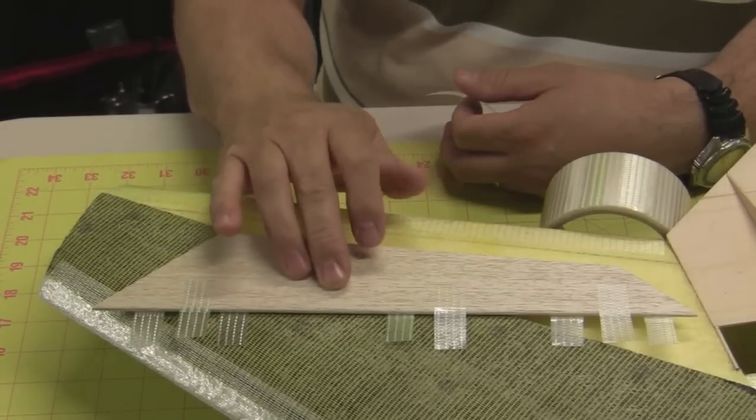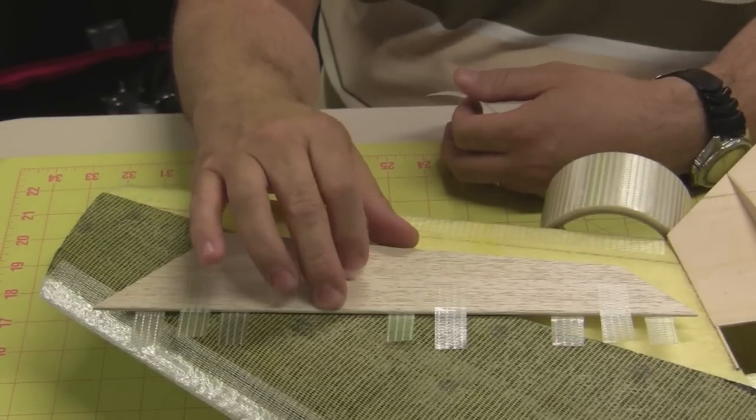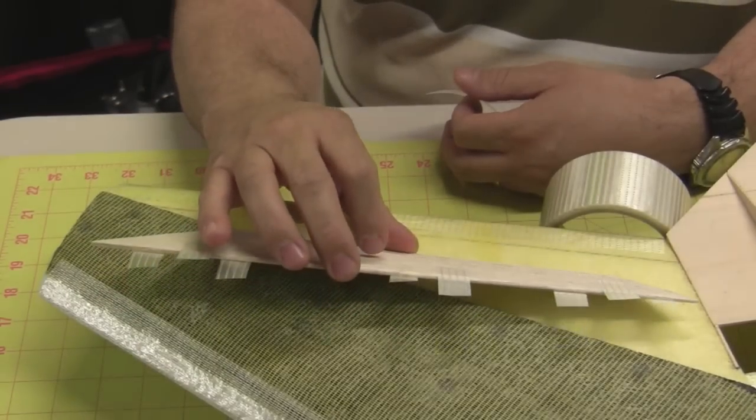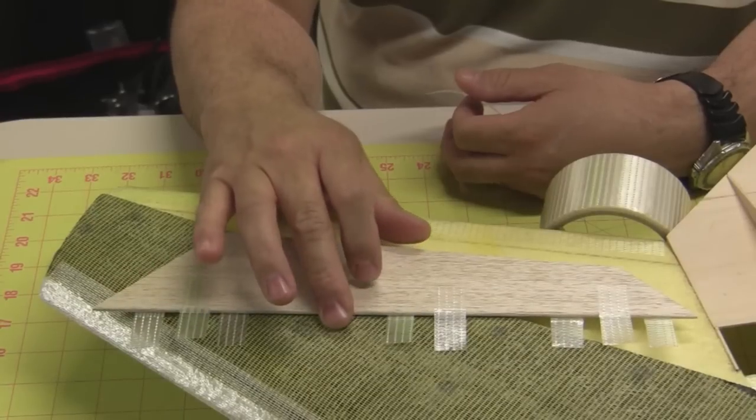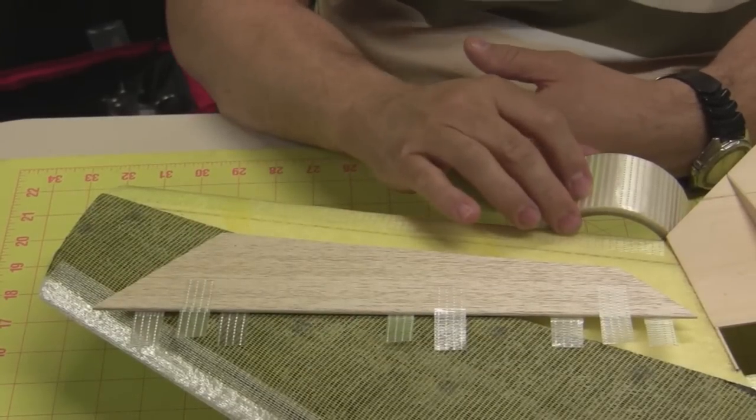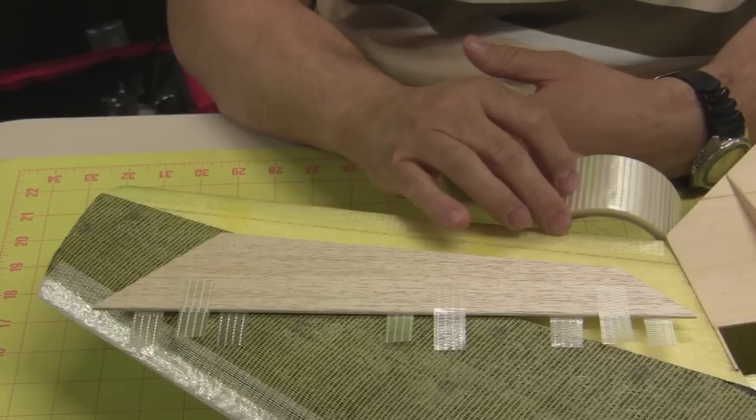Alright, now that we have the two pieces ready, we're going to hinge them onto the wing using the strapping tape and the over-and-under taping method that Paul used on his video when he built his EPP Parkjet.